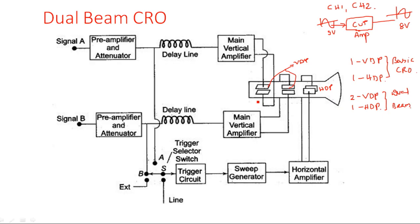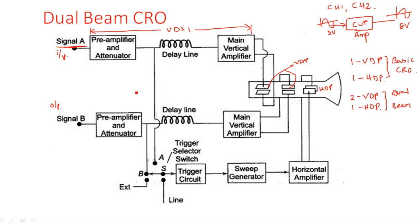Signal A is the first input — for example, the input signal to the circuit under test — and Signal B is the second input, such as the output signal. Signal A passes through vertical amplifier system 1: pre-amplifier (FET amplifier) followed by main amplifier (BJT amplifier), with a delay line incorporated either between the two or after the main amplifier. Similarly, vertical deflection system 2 has the same blocks for Signal B.